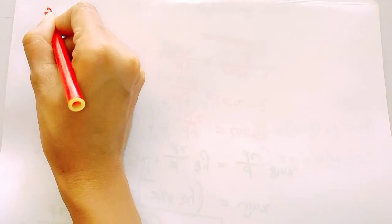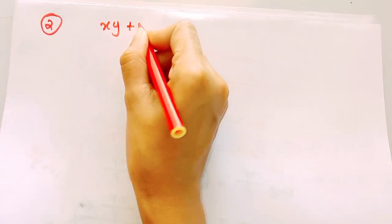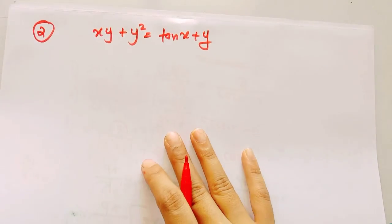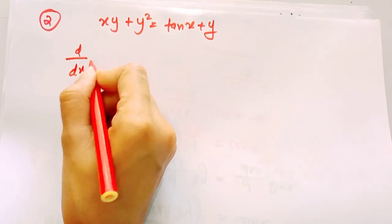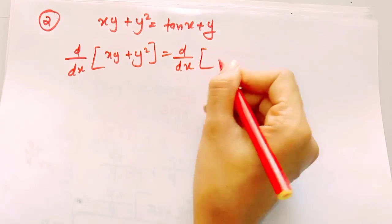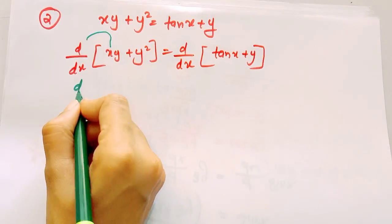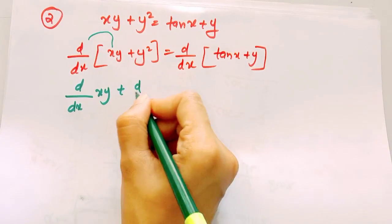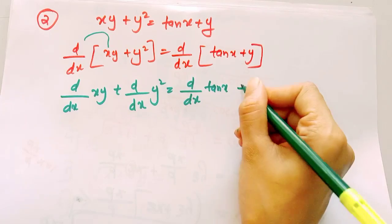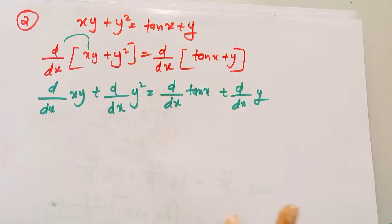Second question: find dy by dx, given xy plus y squared equal to tan x plus y. Let's write the steps. Taking d by dx of both sides: d by dx of xy plus d by dx of y squared equals d by dx of tan x plus y. For the term x into y, the product rule is applied since there are two functions, x and y.